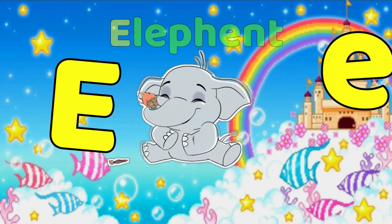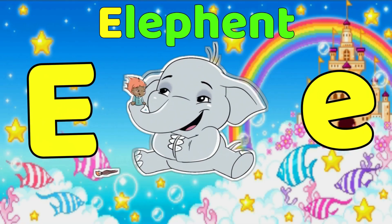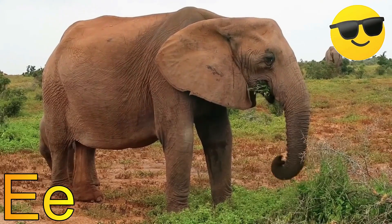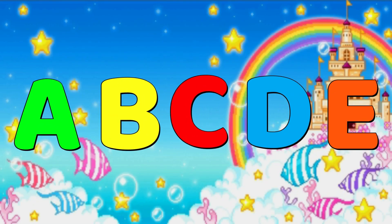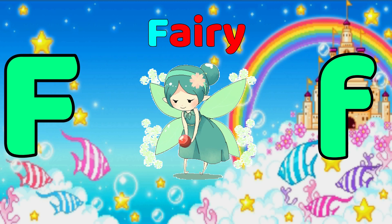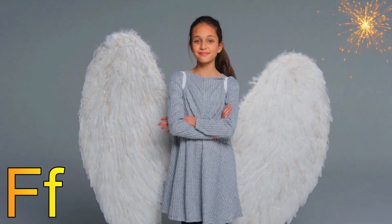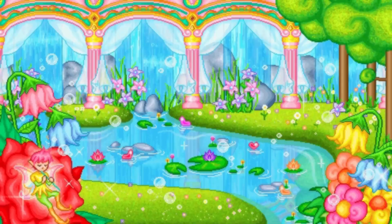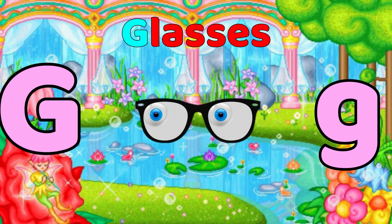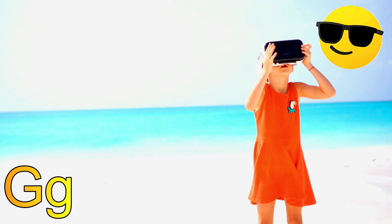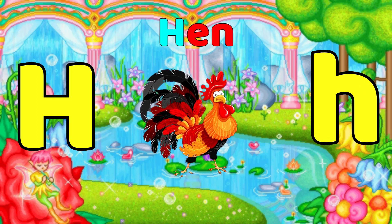E is for Elephant, E. Elephant. F is for Fairy, F. Fairy. G is for Glasses, G. Glasses. H is for Hand, H. Hand.